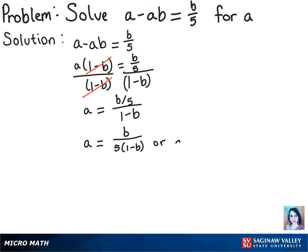Or we could just multiply that through, which will get us a equals b over 5 minus 5b. Either one works, and that's our final solution.